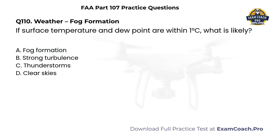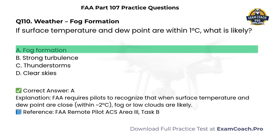Weather. Fog formation. If surface temperature and dew point are within 1 degree Celsius, what is likely? A. Fog formation. B. Strong turbulence. C. Thunderstorms. D. Clear skies. Correct answer: A. FAA requires pilots to recognize that when surface temperature and dew point are close, within approximately 2 degrees Celsius, fog or low clouds are likely.